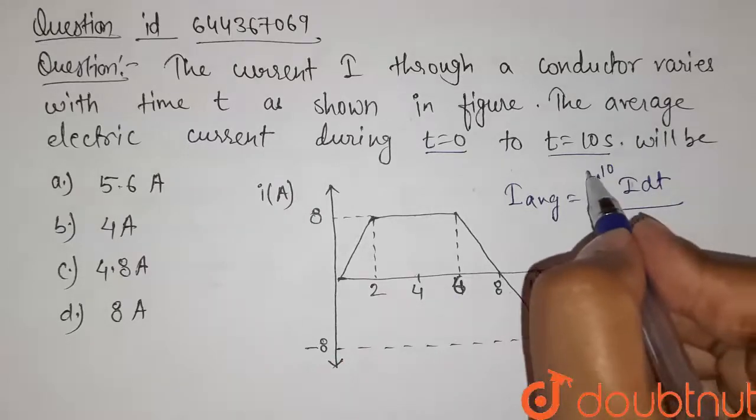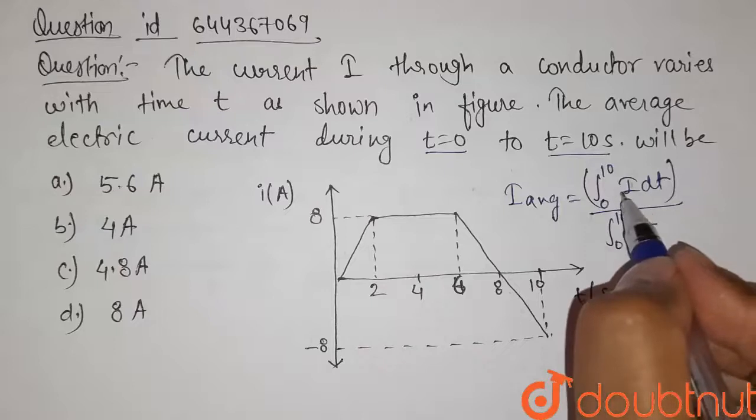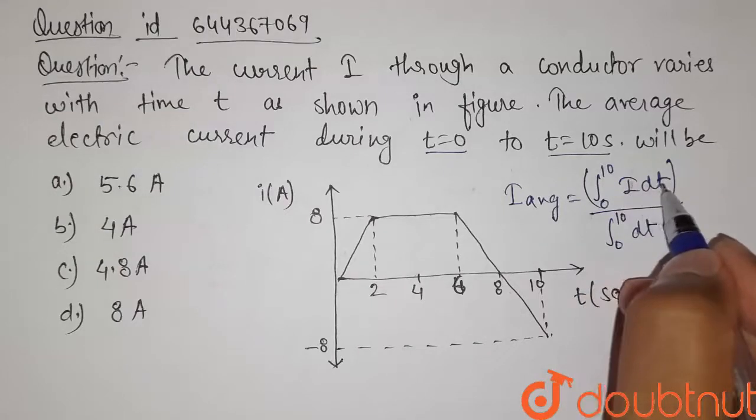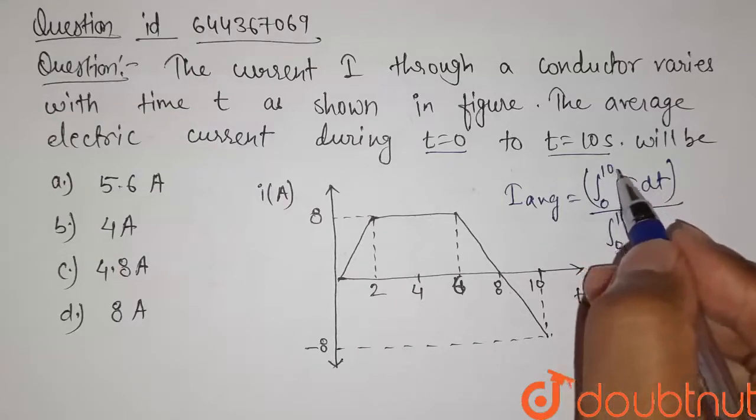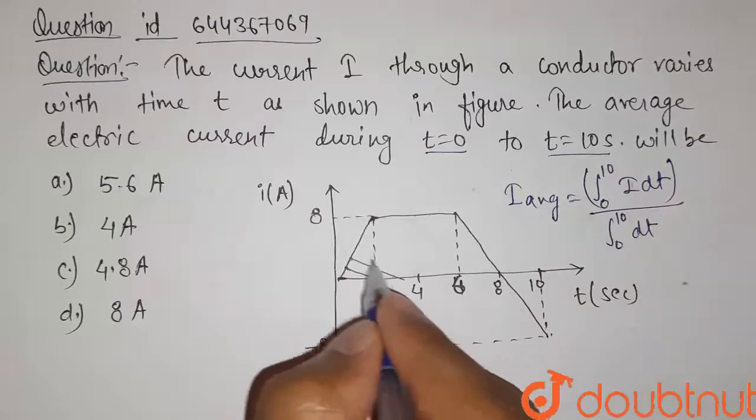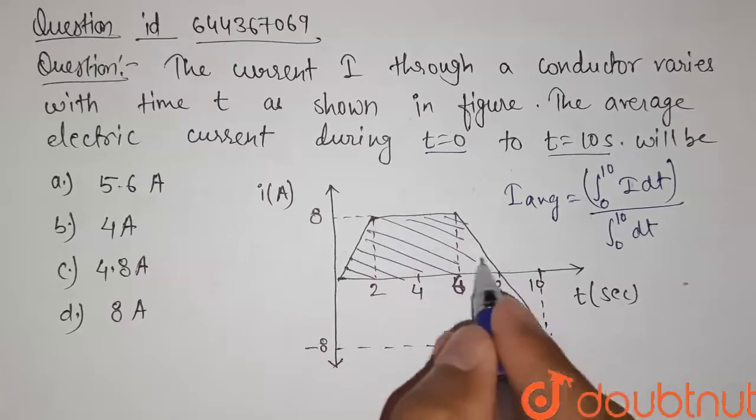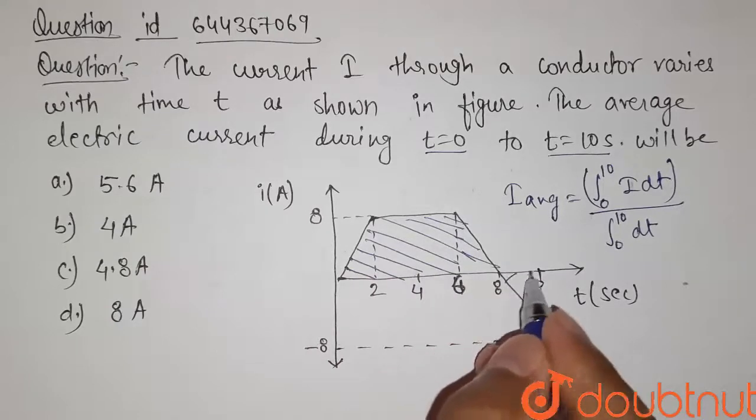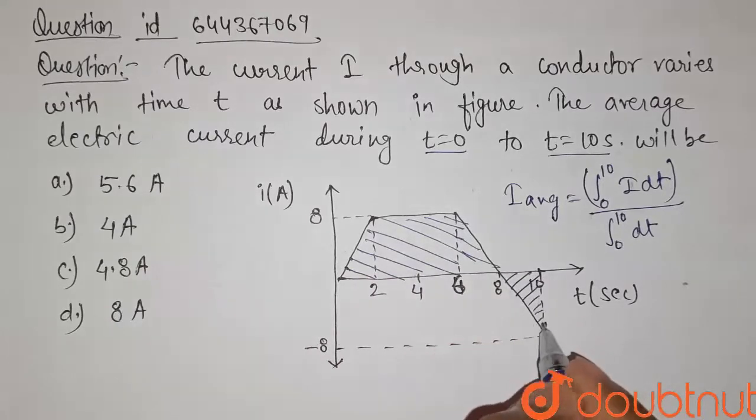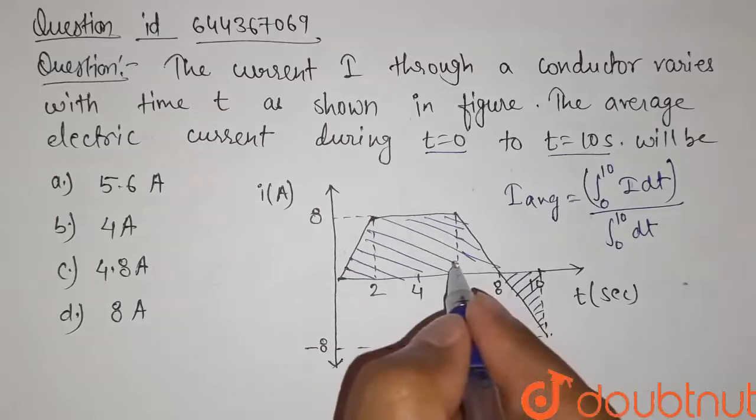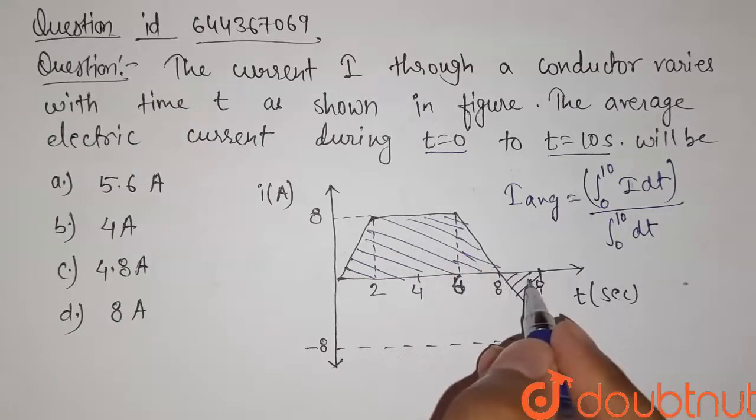Now from the property of integration we know that integration of i dt in the limit 0 to 10 will give us the area under the curve of this i-t graph. This is the area under the curve for this i-t graph. Now let us try to find this area under the curve.